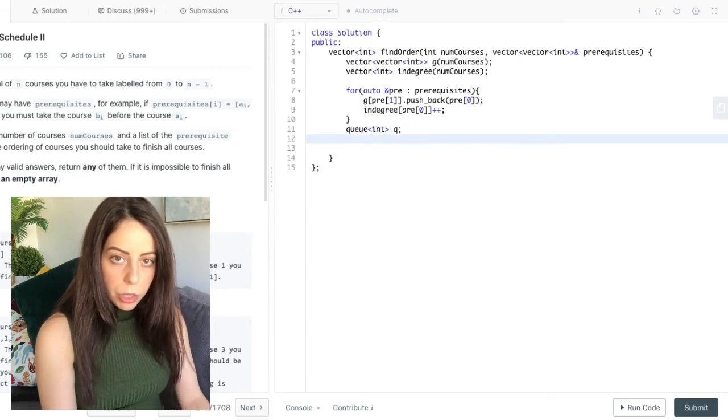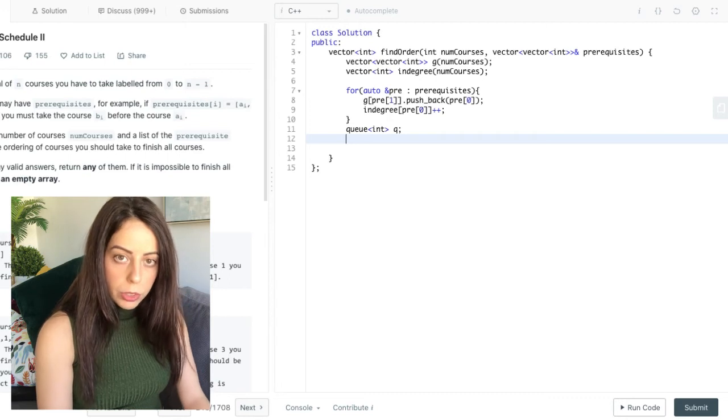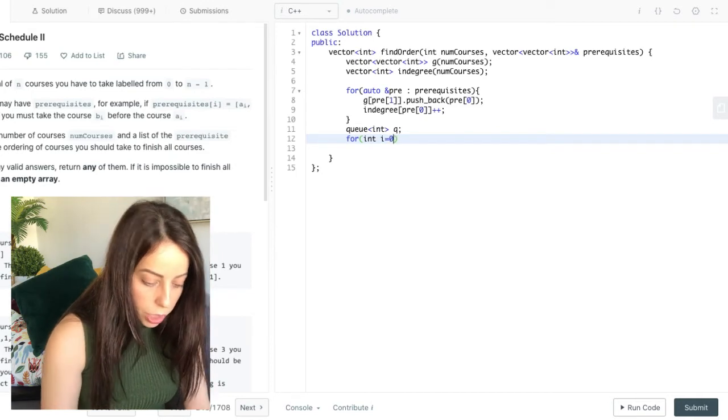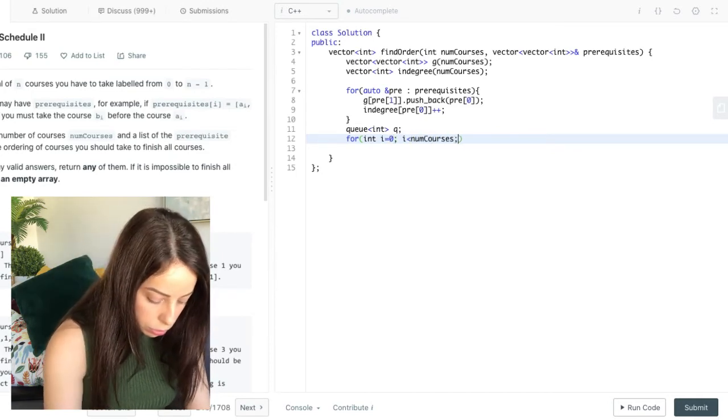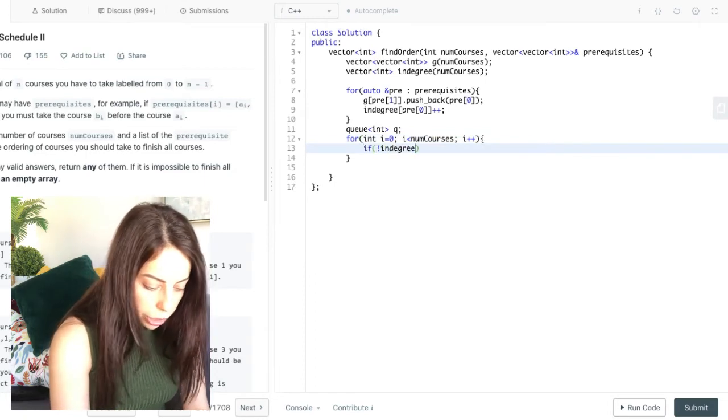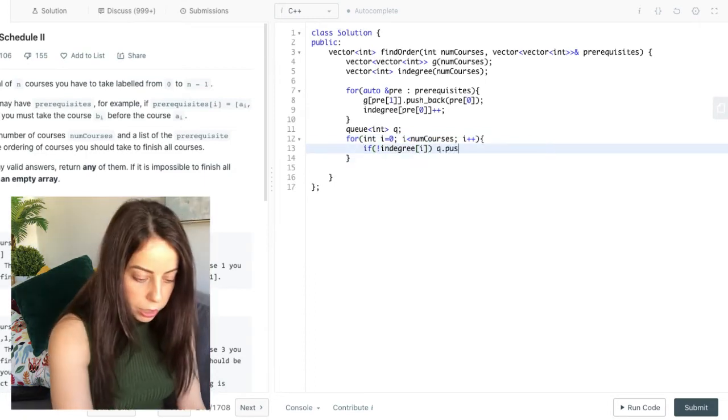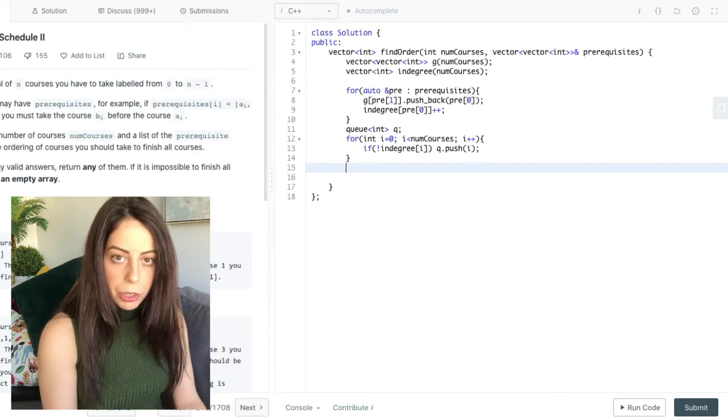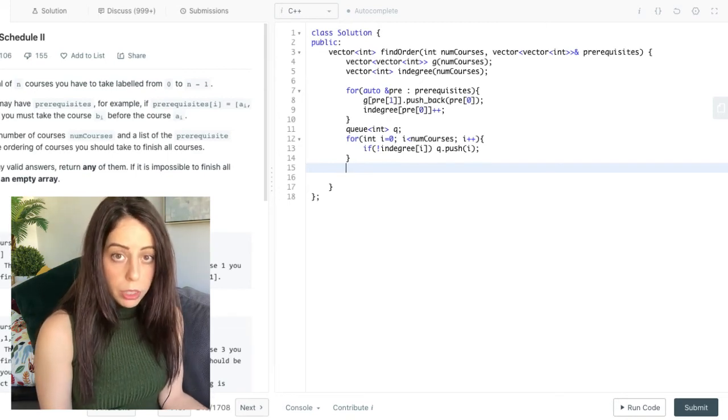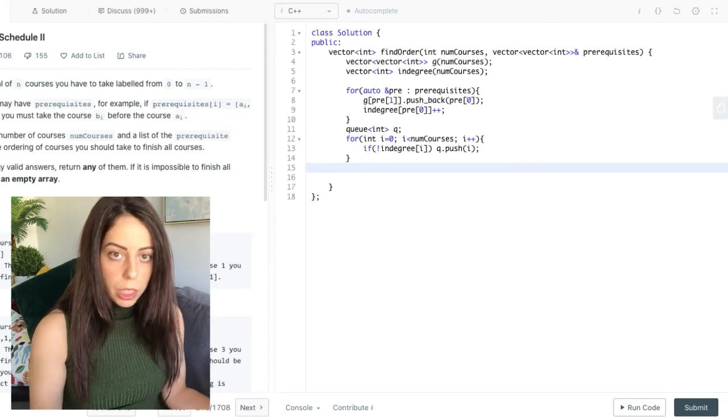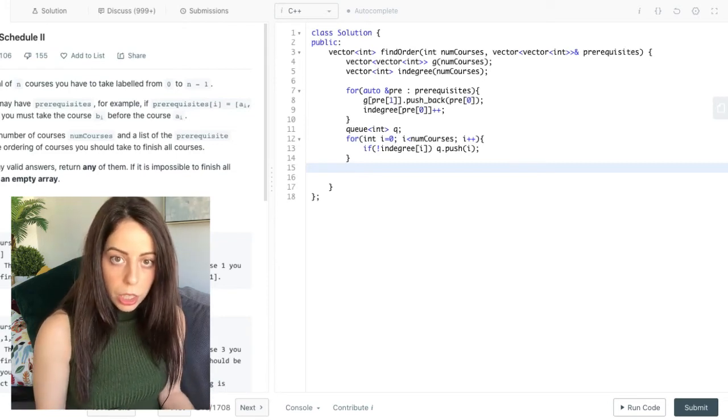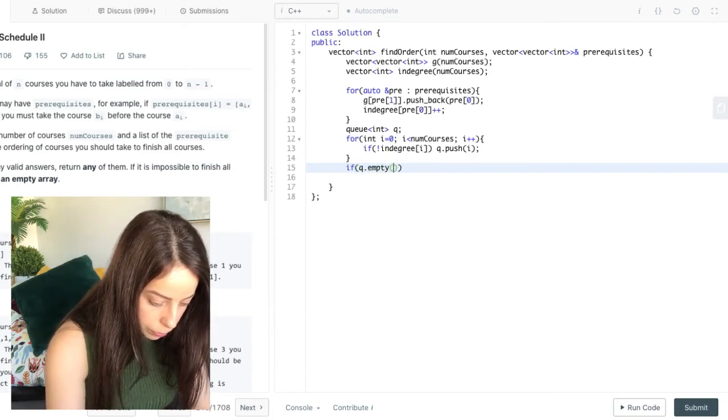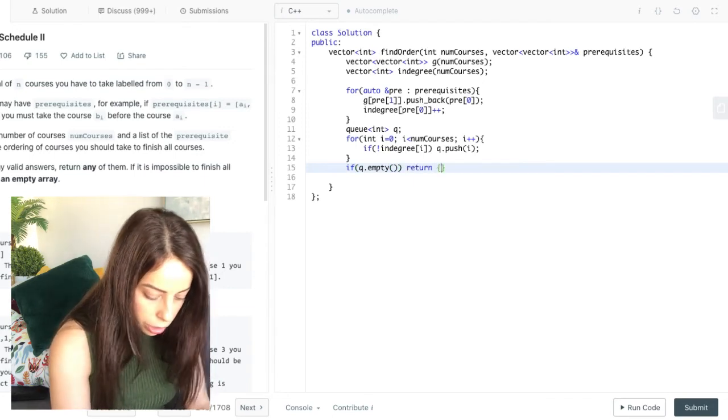Similarly to normal BFS, we want to keep a queue. And this queue will hold all of the courses that we are ready to add to our schedule. So we want to find all the nodes that have zero in degrees and add them to our queue. So if the current in degree is zero, we want to add this node to our queue. And now at this point, if our queue is empty, that means that we have no nodes with zero in degrees. Meaning that the graph is completely made out of cycles and there is no way to finish all the courses. So if the queue is empty, we want to just return an empty array.